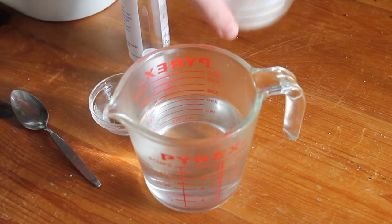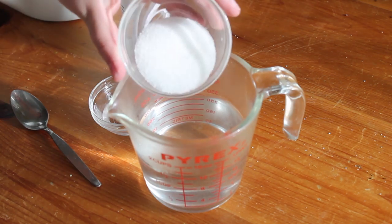Next, you want to add your 2 tablespoons of white sugar to the bowl and then pour your 2 and a half cups of water over top.